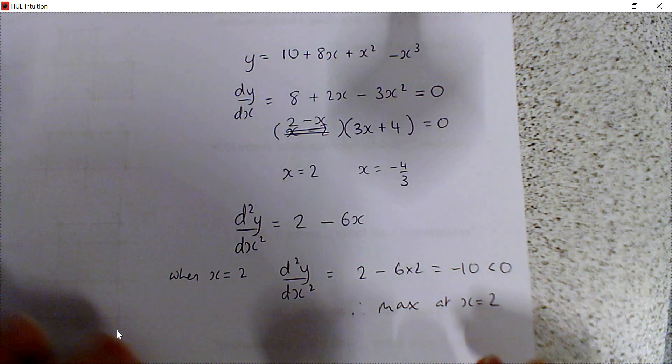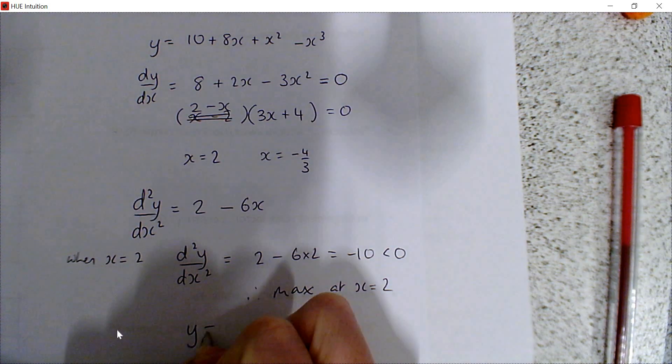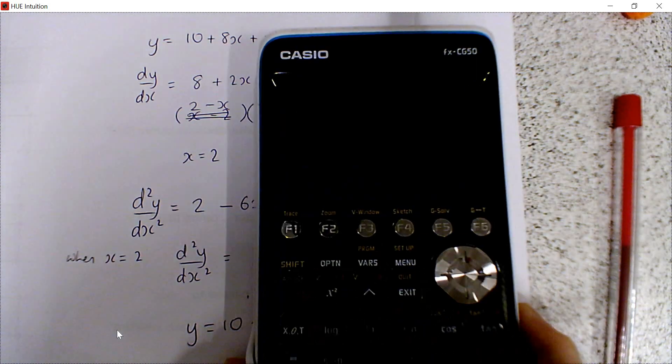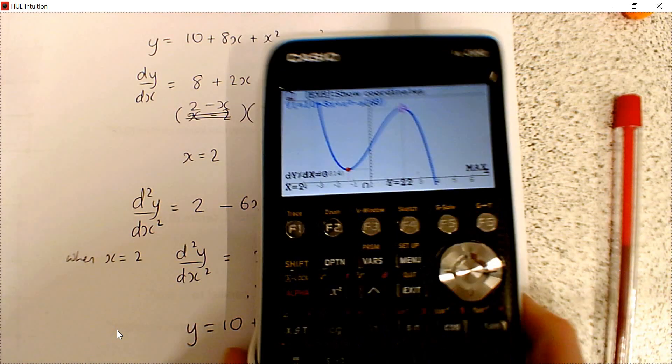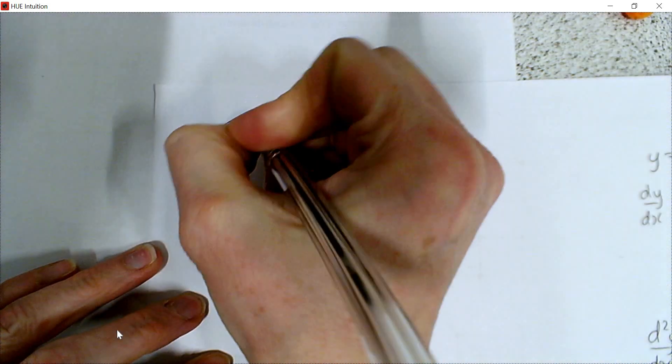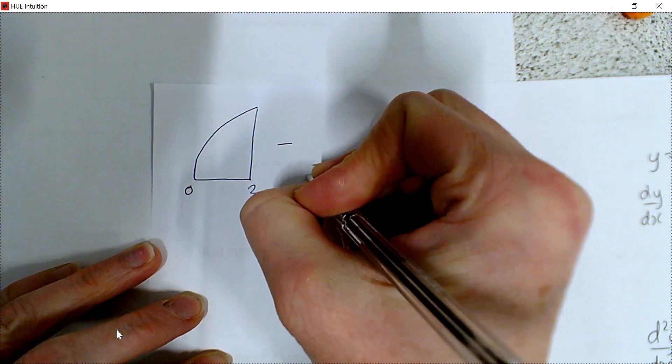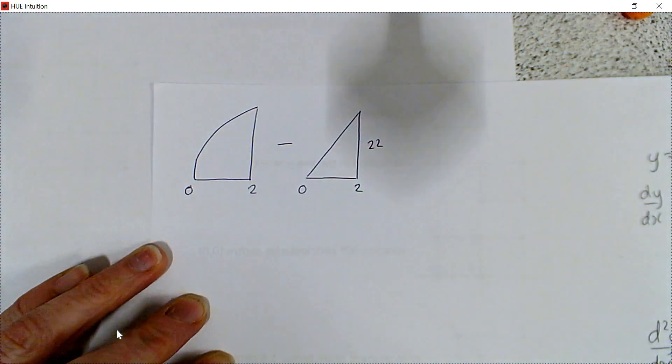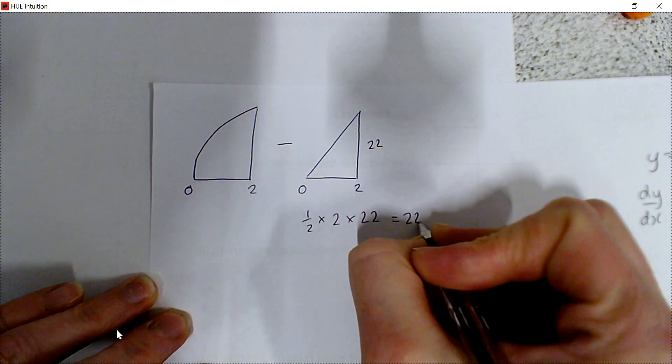Let's find the y value. We've got that the maximum happens when x is 2, and that's going to be y. So y is, we have to substitute back in here: 10 plus 8 times 2 plus 2 squared minus 2 cubed. I can't be bothered to type that. So if I just look at my calculator again and do g-solve and maximum, it tells me that y is 22. Let's put that into our diagram.